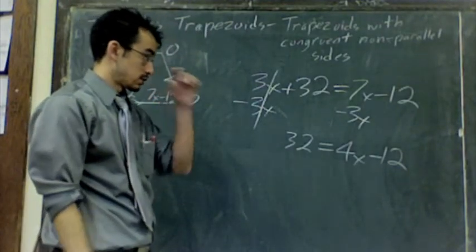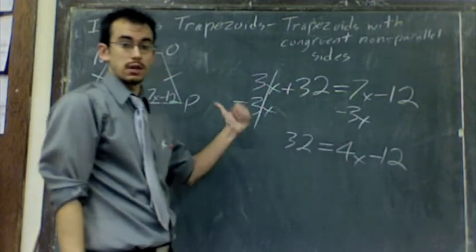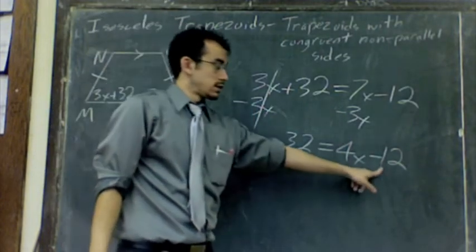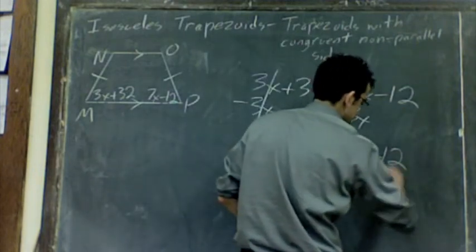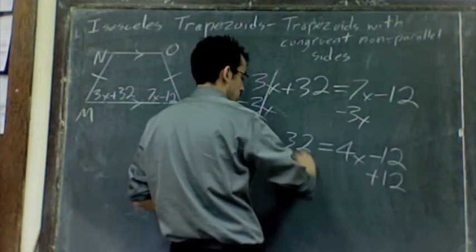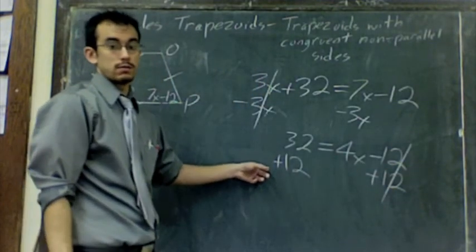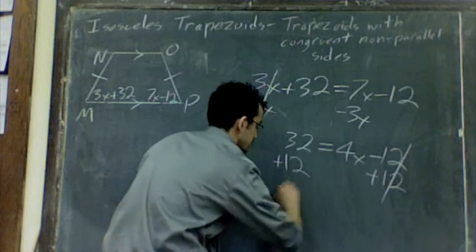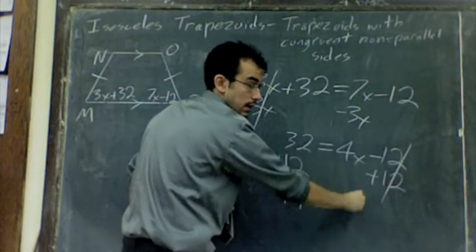We still need to solve this. Get X alone. X is on the right, so everything else is coming over to the left. To get rid of negative 12, we do the opposite. We'll add 12 to the right and add it to the left. The 12s will cancel. 32 plus 12, that happens to be 44. Bring down the equals. Bring down the 4X.